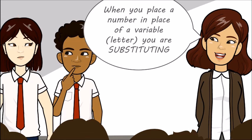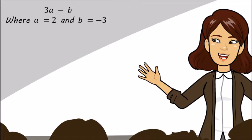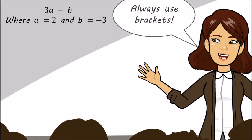When you place a number in place of a variable, like a letter, you are substituting. Let's practice substitution. Let's say we have 3a minus b where a equals 2 and b is minus 3. Always use brackets. So we have 3 times 2 minus minus 3 which is 6 plus 3 which is 9.